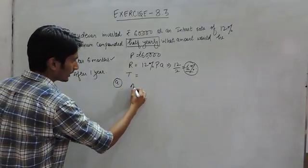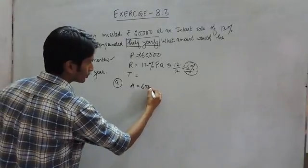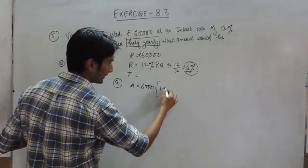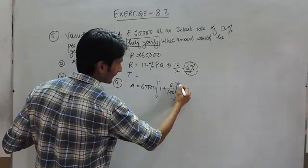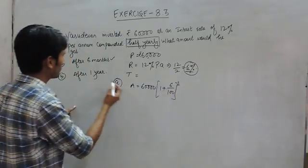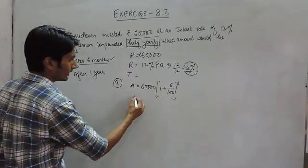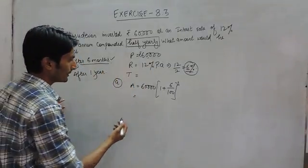So in the first case, your amount will be equal to principal, which is equal to this much, and 1 plus R, here is 6%, and you will get the interest only 1 time because after 6 months you have to calculate the amount. So if the interest is half yearly, only 1 time interest will be paid.